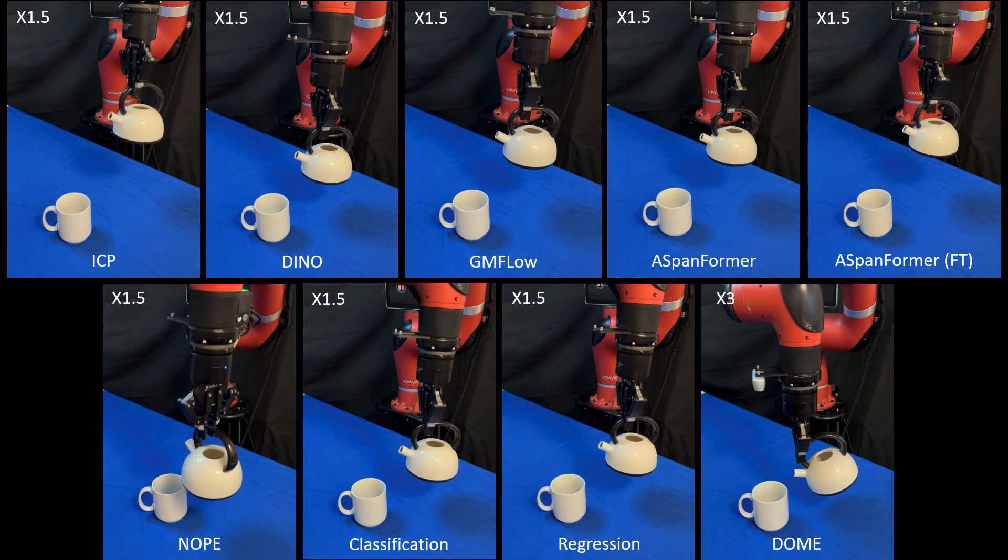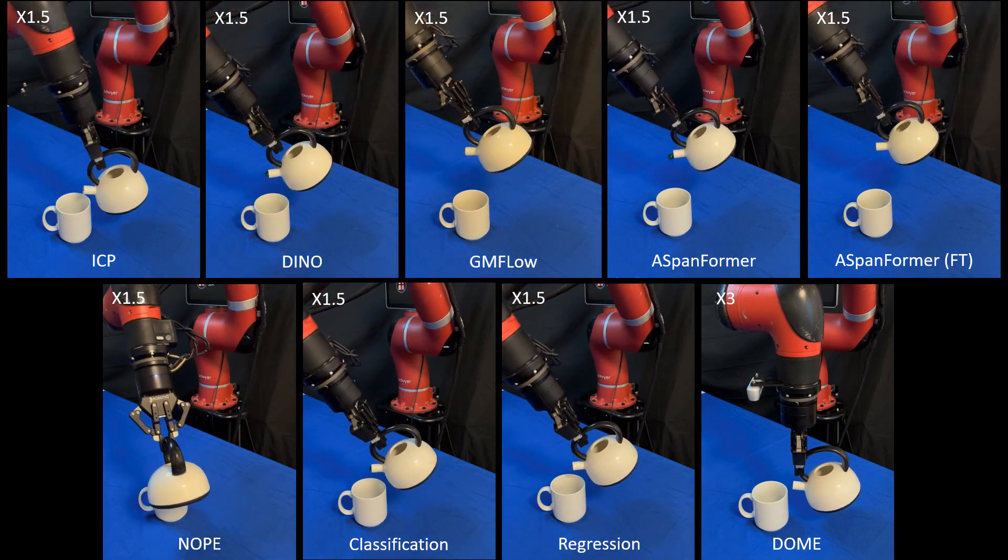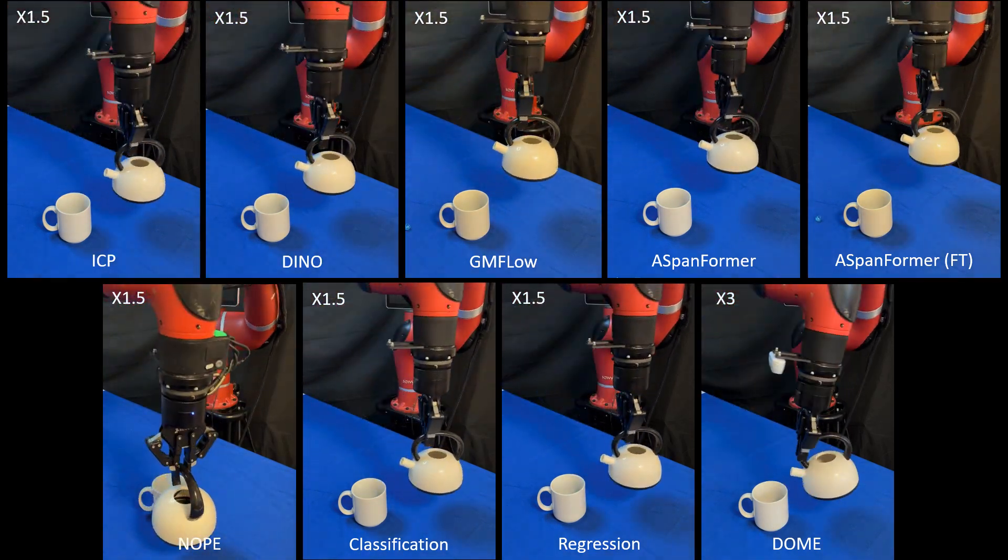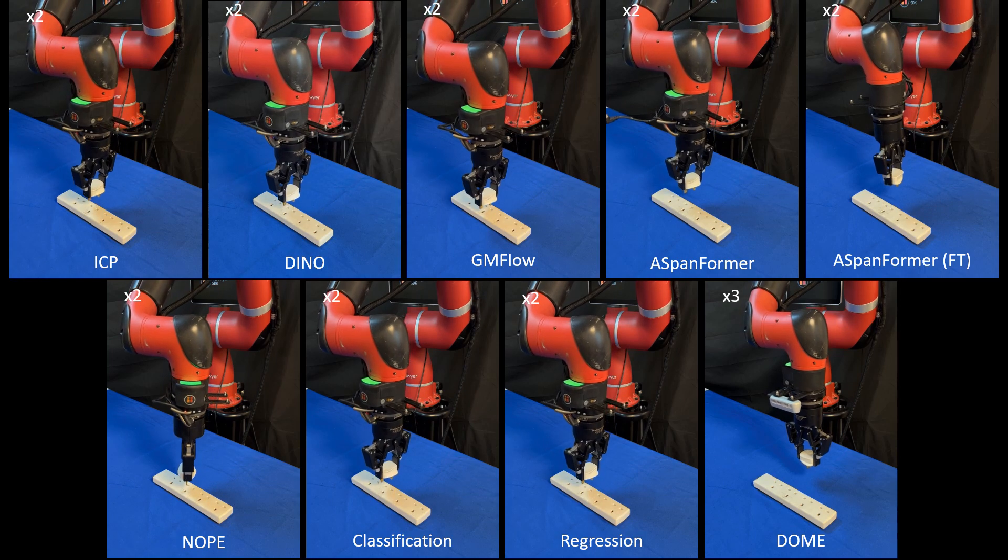Here we can see example roll-outs for each of the considered methods on the T task. Here we also show example roll-outs for all the baseline methods for the plug task.